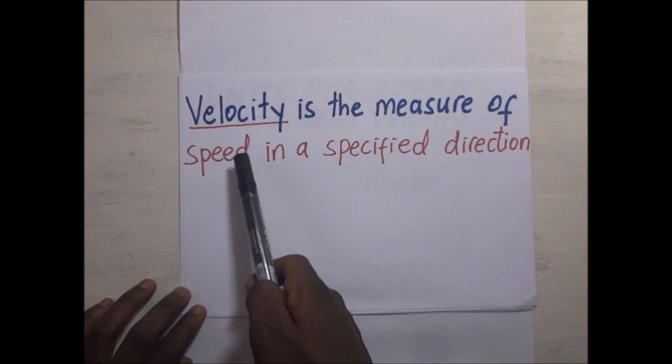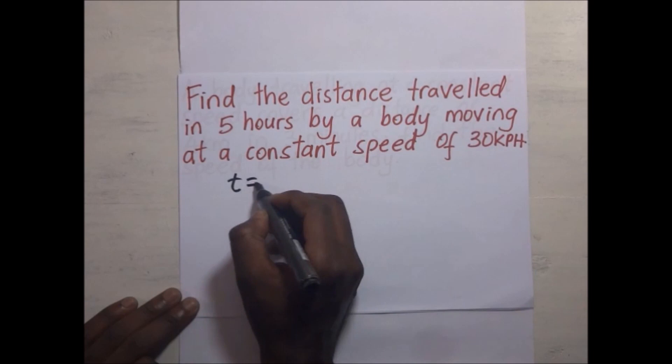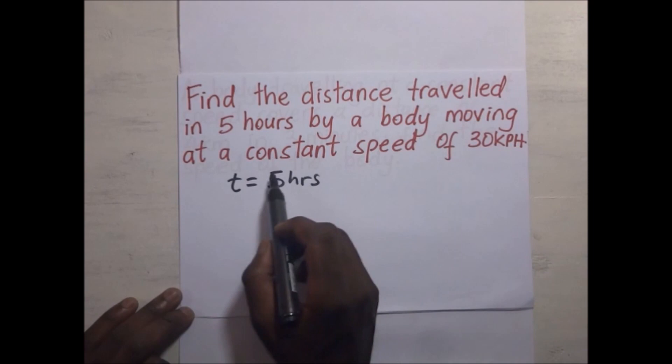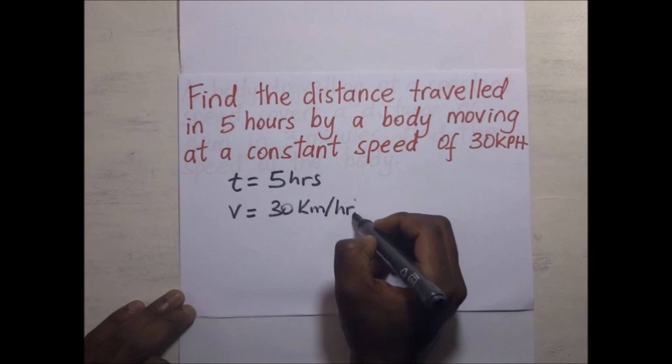Speed and velocity have the same units — one is scalar, the other is vector. Now let's look at some examples. Find the distance traveled in 5 hours by a body moving at a constant speed of 30 kilometers per hour. To summarize: time is 5 hours, speed V equals 30 kilometers per hour, and we are asked to find the distance.